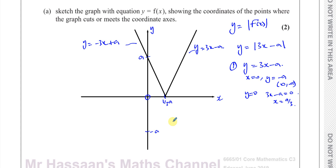So that's two ways of sketching this graph — the first way is probably easier. That's the sketch for part (a), worth two marks. You must show the coordinates where the graph cuts or meets the axes, so write them as (a/3, 0) and (0, a).